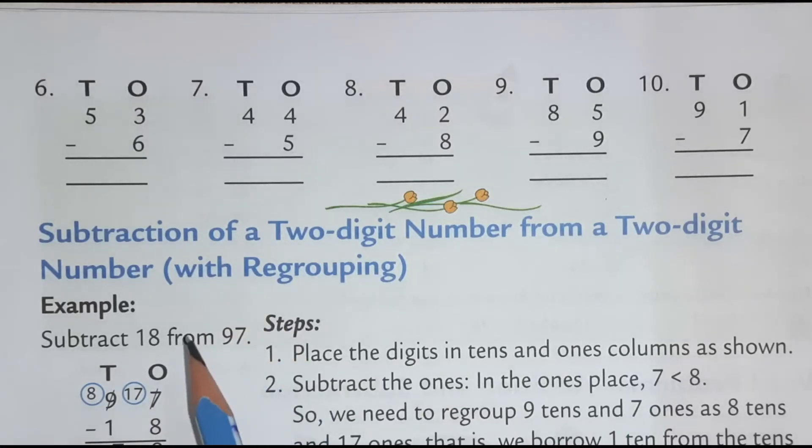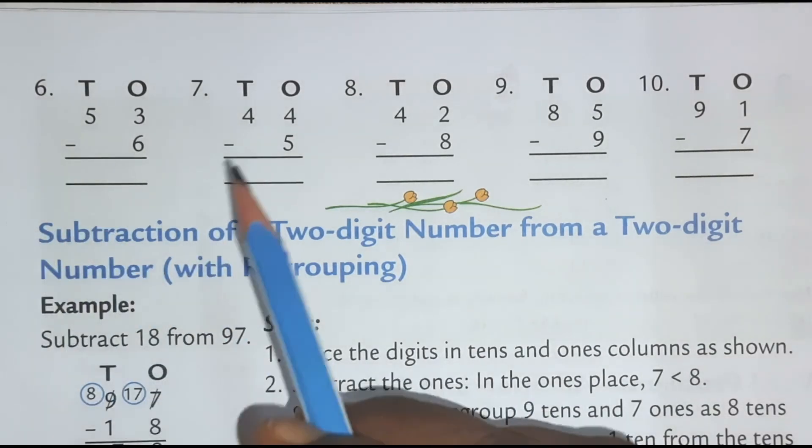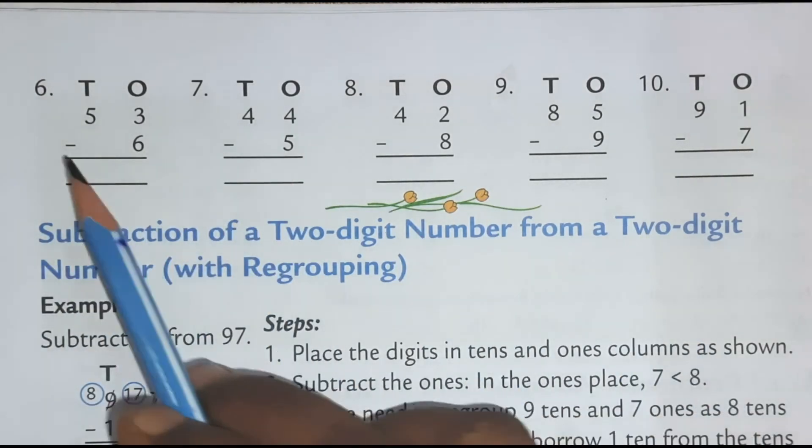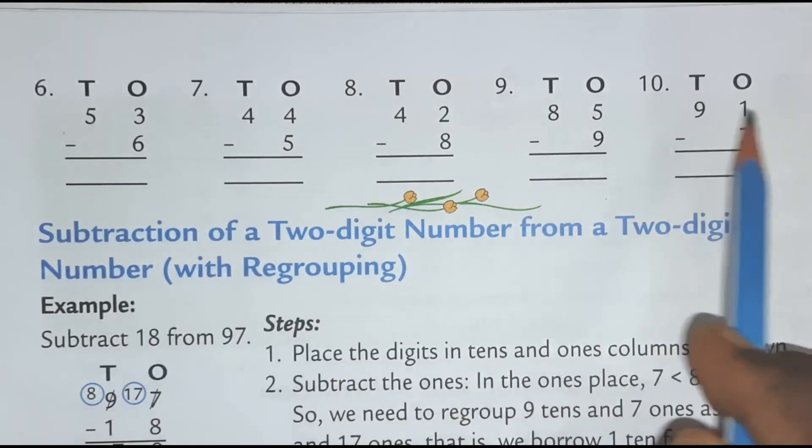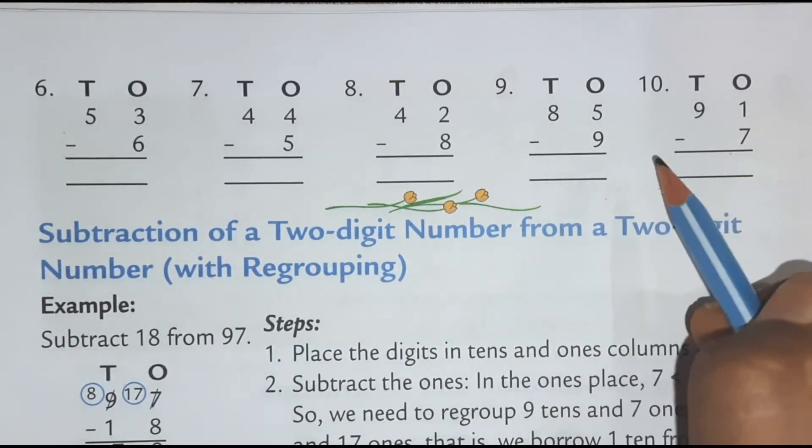Children as you can see there are 10 sums in exercise 4.4. 2 in that group I had done. Now this is here also 6, 7, 8, 9, 10 sums are there. So here also I am solving your last 2 sums.